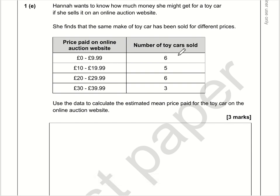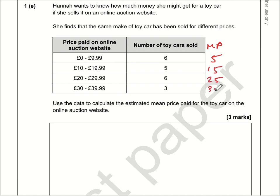Part e: six toy cars have been sold between £0 and £9.99. We don't know the exact prices, so we assume they were all sold for the midpoint. I'll call it £5 as the halfway point between zero and ten. So the midpoints are £5, £15, £25, and £35. Six cars sold at an estimated £5 gives a total of £30.